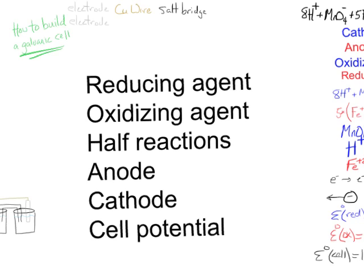We'll have an anode. That's going to be the site, the part of the experiment where the oxidation occurs. A cathode. That'll be the site where the reduction occurs. And then the cell potential, which will tell us how much work or how much voltage this galvanic cell is going to be able to do.